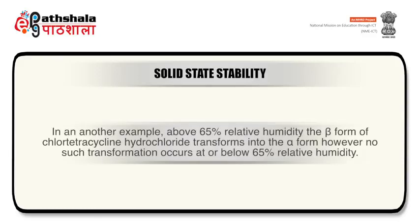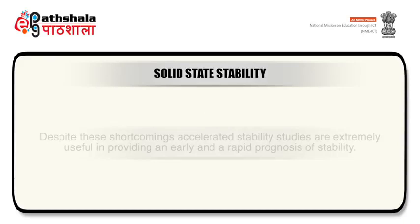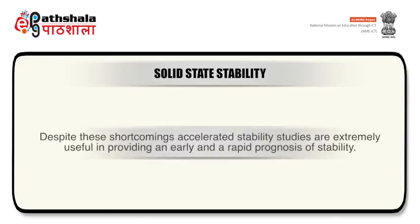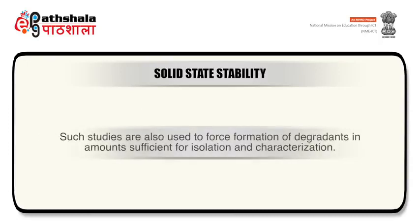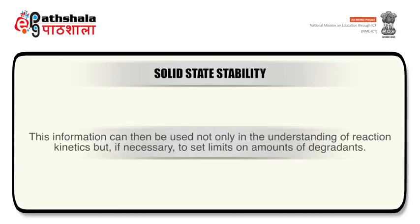In another example, above 65% relative humidity, the beta form of chlortetracycline hydrochloride transforms into the alpha form. However, no such transformation occurs at or below 65% relative humidity. Despite these shortcomings, accelerated stability studies are extremely useful in providing an early and rapid prognosis of stability. Such studies are also used to force formation of degradants in amounts sufficient for isolation and characterization, which can then be used in understanding reaction kinetics and if necessary to set limits on the amount of degradants.